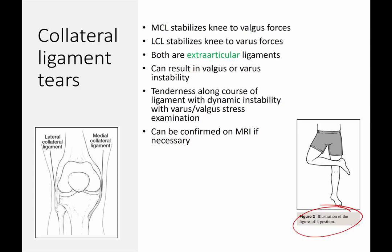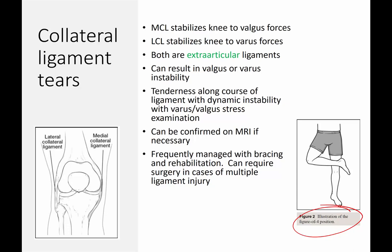If necessary, an MRI can be obtained to confirm your diagnosis. In isolation, these frequently can be managed with bracing and rehabilitation, especially MCL tears, which are pretty common. But they can require surgery in cases of multiple ligament injuries — if you have ACL with LCL, or ACL with MCL and PCL, or whatever combination, they often do require surgical treatment.